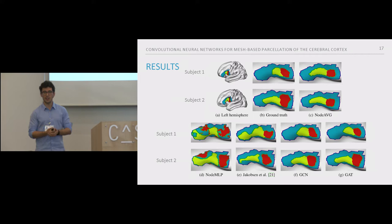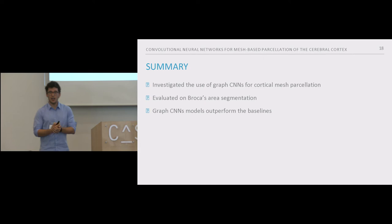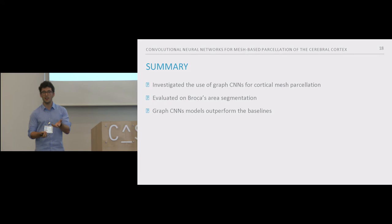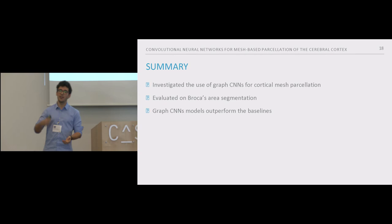To summarize the main highlights of our work: we applied graph convolutional neural networks to process cortical meshes directly on their mesh structures. We evaluated graph convolutional-based models against simpler baselines on the task of Broca's area segmentation. We empirically showed, both quantitatively and qualitatively, how graph CNNs outperform the other baselines and the previous work.